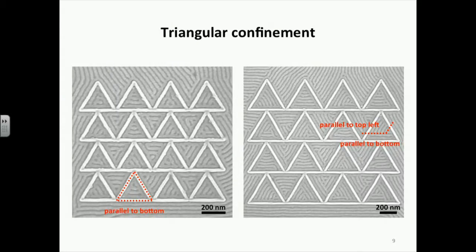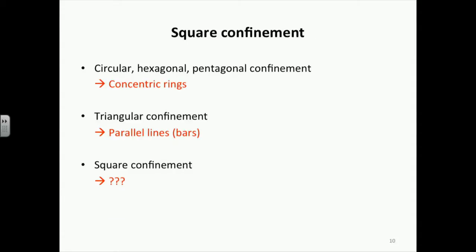Next, we tried triangular confinement. Unlike the previous cases — circular, hexagonal, and pentagonal confinement — we observed bar-shaped structures instead of concentric triangular rings. Sometimes the bars were parallel to one of the three sides, as shown in the left SEM image. Sometimes the bars were a combination of smaller bars, each parallel to one of the three sides, as shown in the right SEM image. So for circular (180°), hexagonal (120°), and pentagonal (108°) confinement we observed concentric ring shapes, while triangular confinement (60°) produced parallel bars.